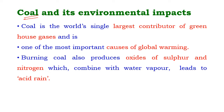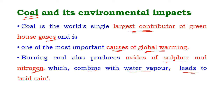Coal and its environmental impacts. Coal is the world's largest single contributor of greenhouse gases and hence one of the most important causes of global warming. Burning of coal also produces oxides of sulfur and nitrogen. These oxides, when combined with water vapor during the rainy season, lead to acid rain.